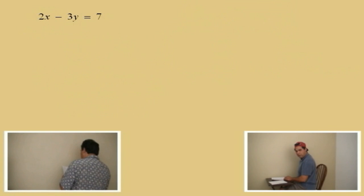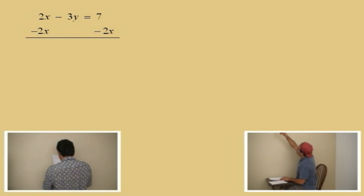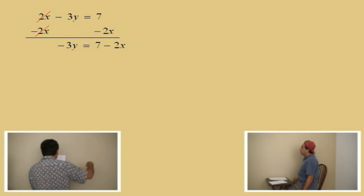Okay, here we go. 2x minus 3y equals 7. We're solving for y. What's our first step, Charlie? Subtract 2x from both sides. That's right — subtract 2x from both sides so that 2x minus 2x is 0. Those will cancel out, leaving you with negative 3y on the left-hand side. And the right-hand side? 7 minus 2x. We're not going to leave it as 7 minus 2x — we're going to use the commutative property. And 7 minus 2x is the same as negative 2x plus 7. Very good.